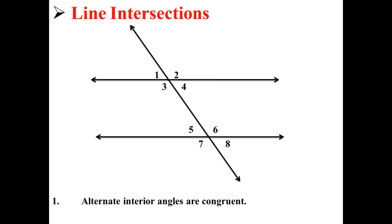The first rule for line intersections is that alternate interior angles are always congruent. To say that they're congruent is to say that they are equal. So here, 3 is equal to 6 and 4 is equal to 5.